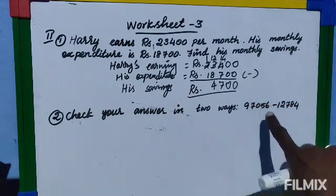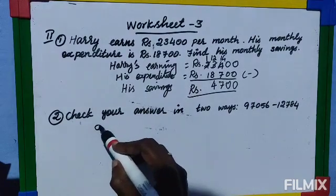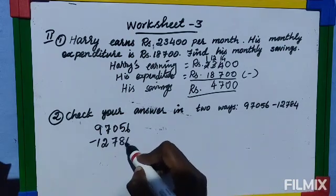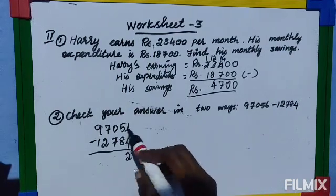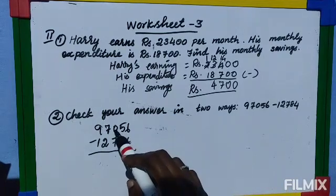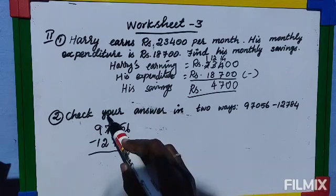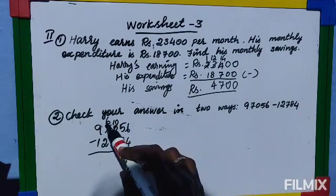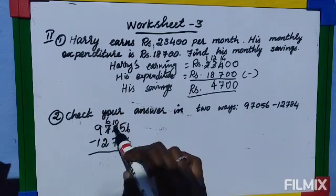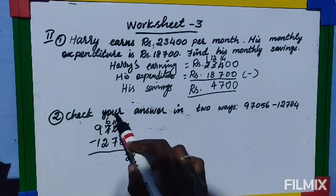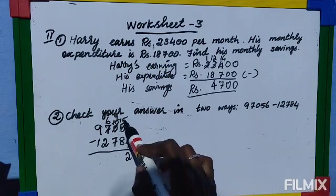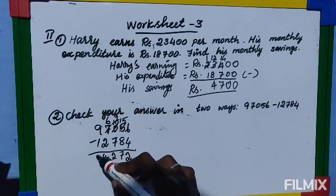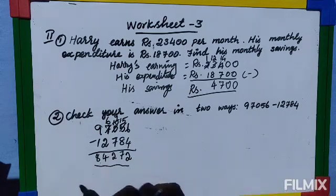Now the next sum — check your answer in two ways. Let's do the subtraction first: 97,056 minus 12,784. 6 minus 4 is 2. Since 5 is smaller than 8, borrow — but the next digit is 0, so borrow from 7 (6 remains), that 1 comes here making 10, then borrow again giving 9 and 15. 15 minus 8 is 7, 9 minus 7 is 2, 6 minus 2 is 4, 9 minus 1 is 8. The answer is 84,272.